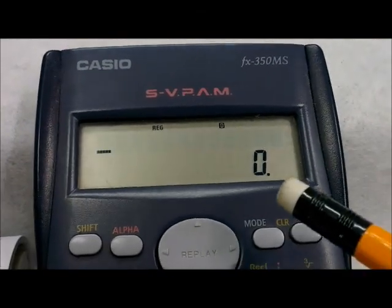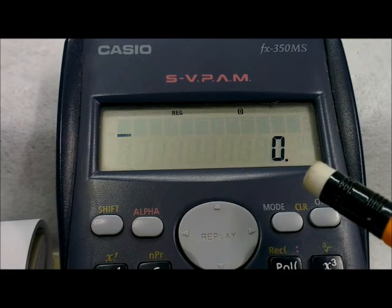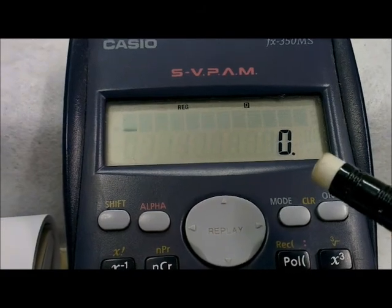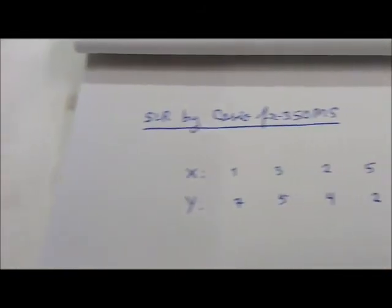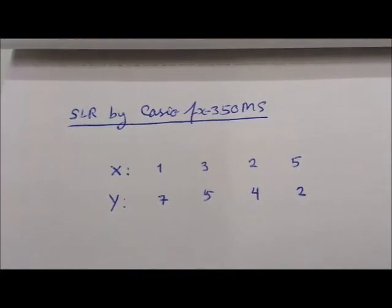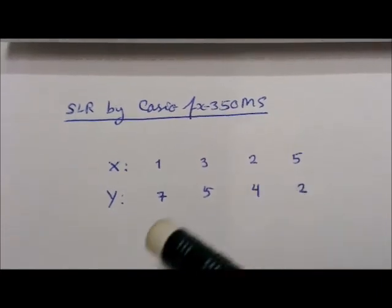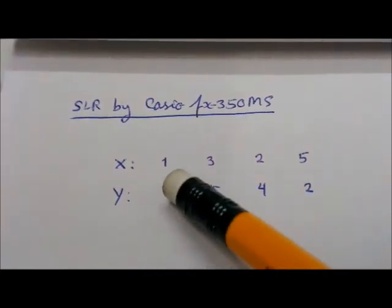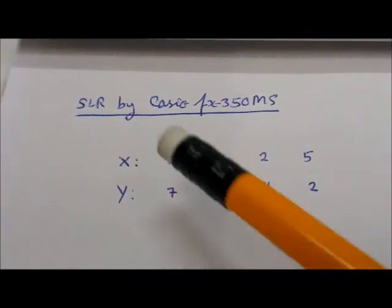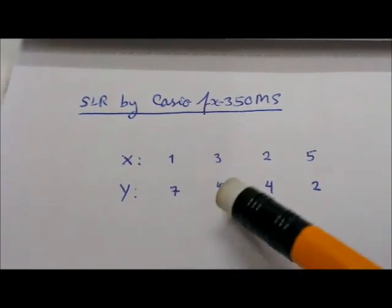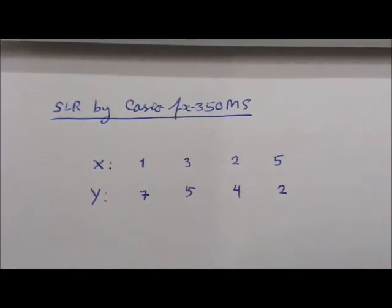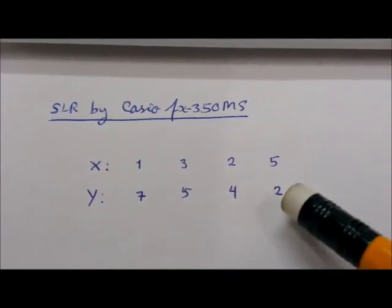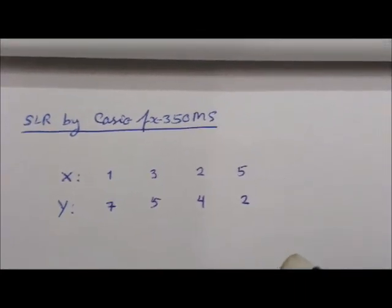Now enter the dataset pair by pair. The pairs are: one comma seven, three comma five, two comma four, and five comma two. Press Enter after each pair.